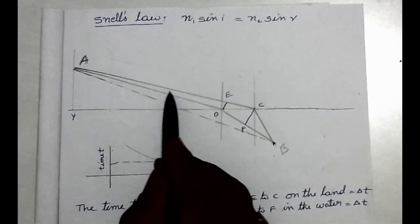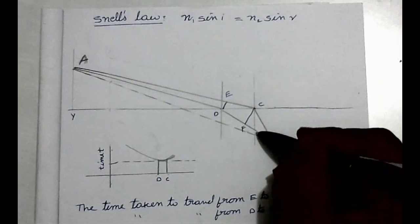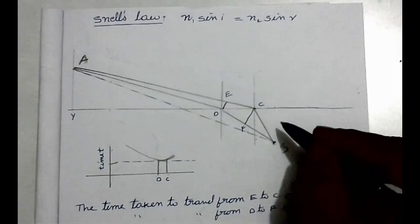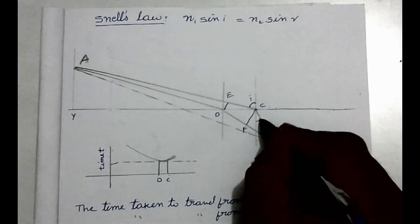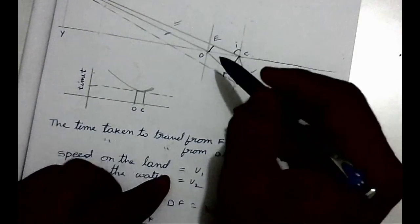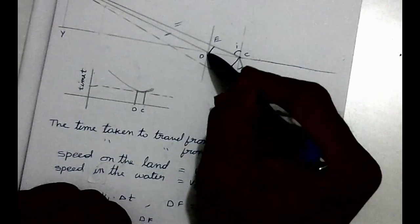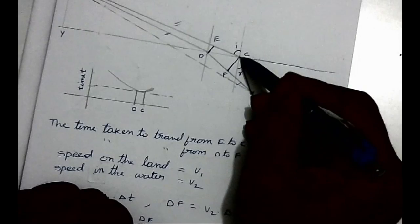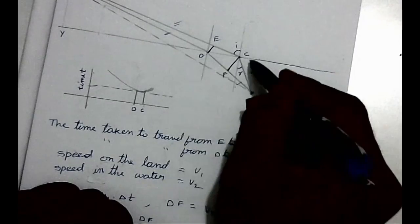Now this light ray is traveling like this. C is the point of incidence, and this is the normal drawn at that point C. CB is the refracted ray. i is the angle of incidence and r is the angle of refraction. Here we have two right angle triangles. From point D, draw a perpendicular onto the incident ray: DE is perpendicular to AC, so triangle DEC is a right angle triangle. Similarly, draw a perpendicular from C onto the refracted ray DB to get right angle triangle DCF.